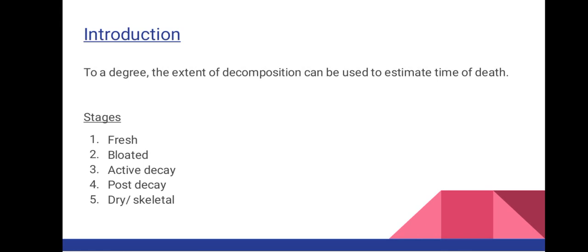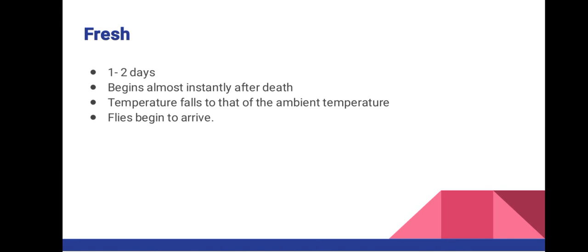The first stage is the fresh stage, and it happens one to two days after death. It begins almost instantly from the moment of death. The heart stops beating, body cells are deprived of oxygen, pH changes occur, and cells gradually lose their structural integrity and begin to break down. Reducing cellular enzymes break down cells and tissues — this is called autolysis.